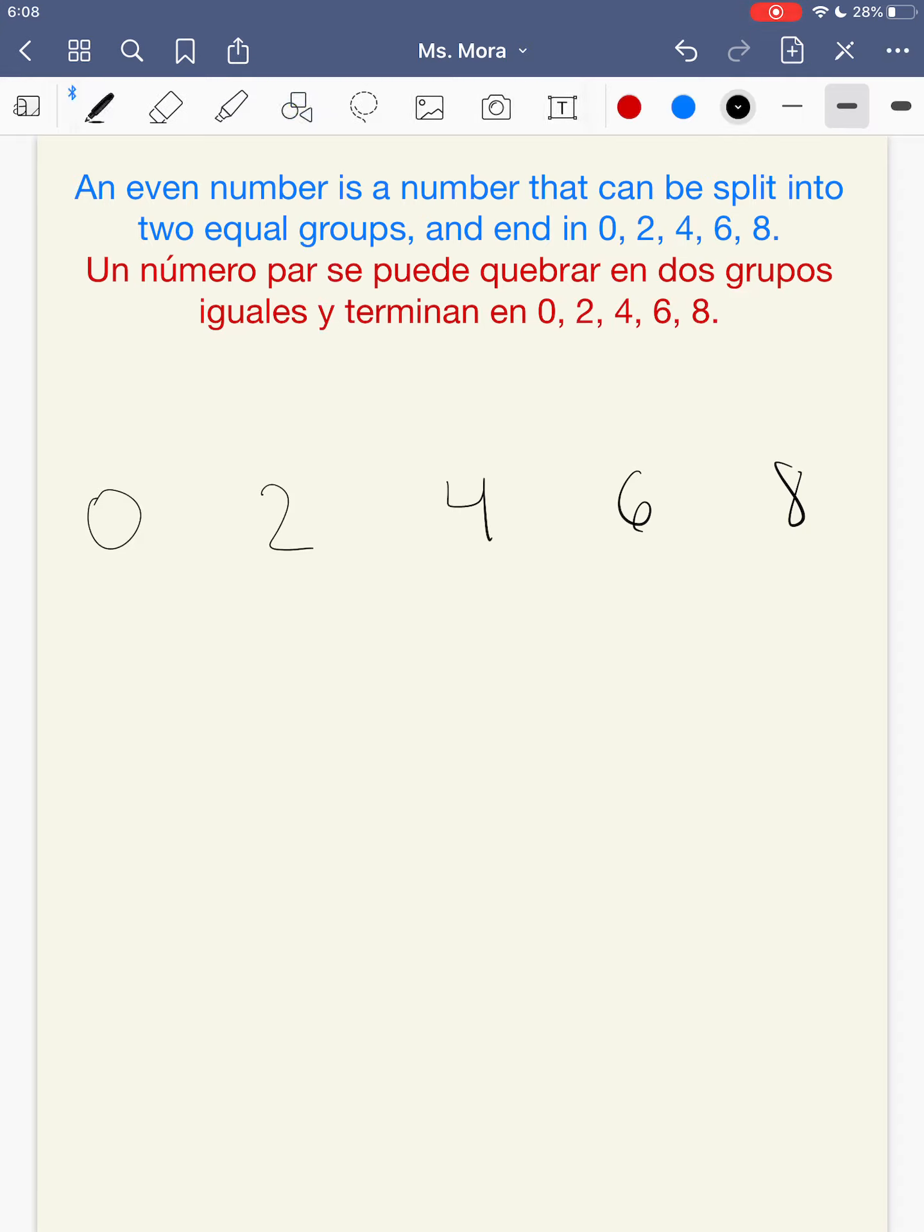For example, if I have 0 here, well you can't really split it up into anything, but if I have 10, I can split 10 up into two equal groups of 5. 10 lo puedes quebrar a dos grupos iguales de 5.